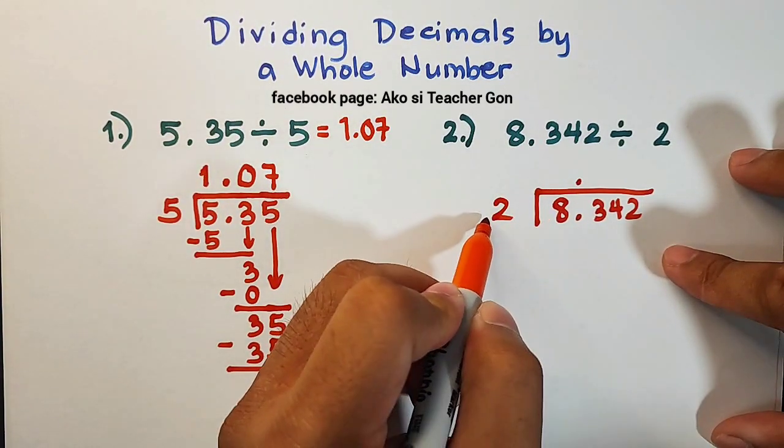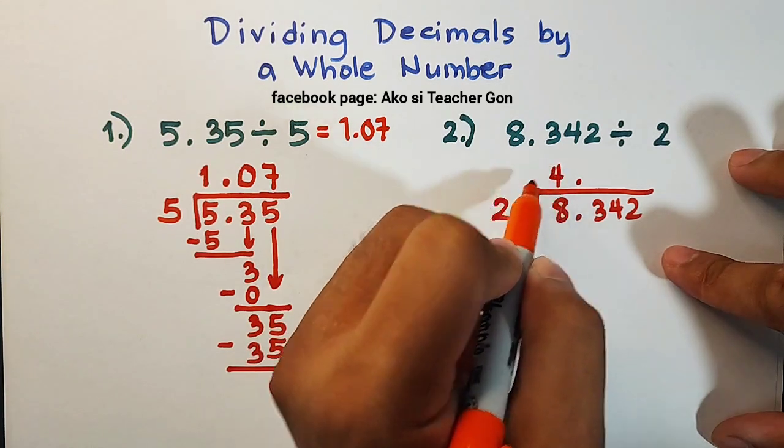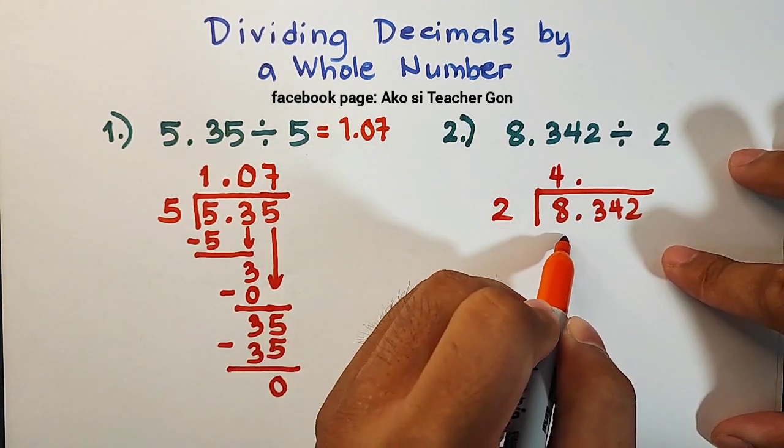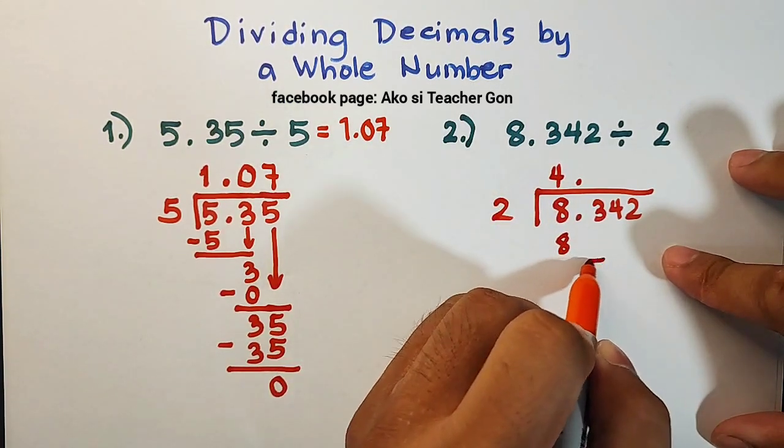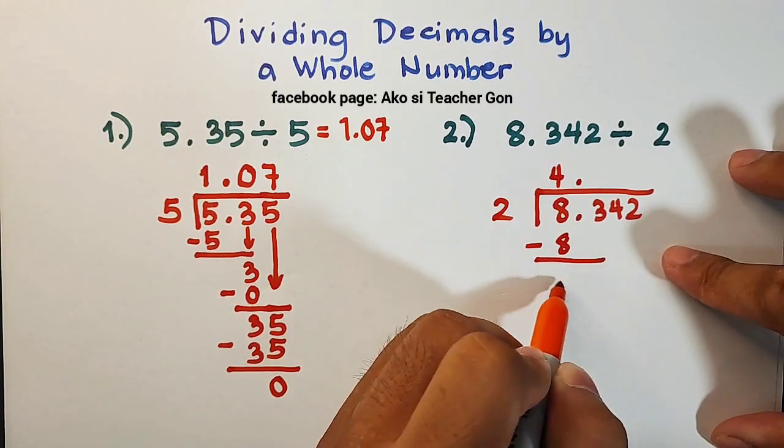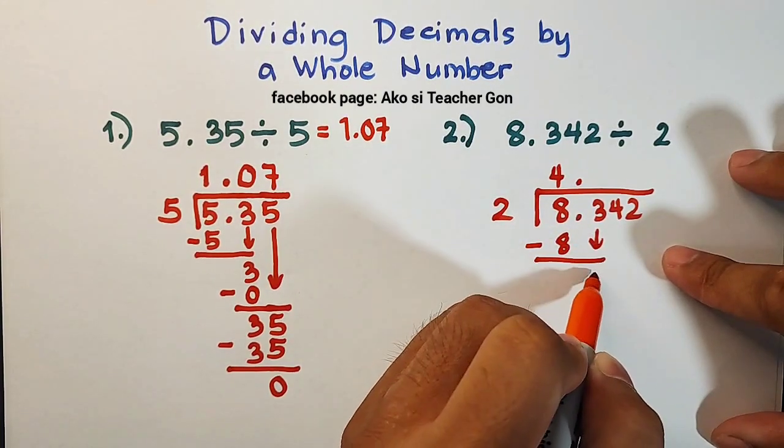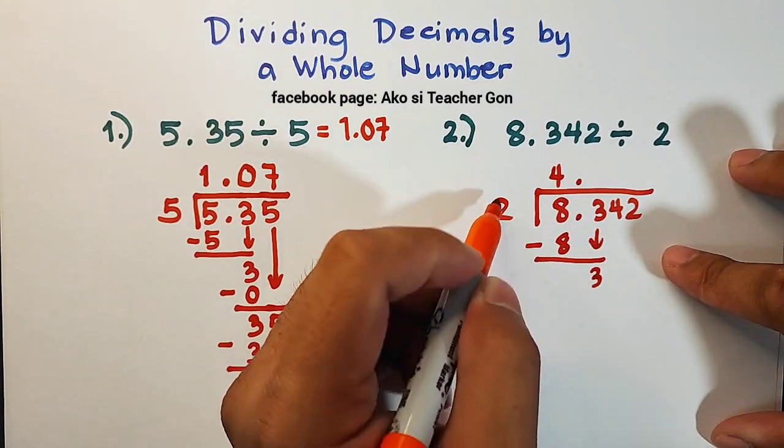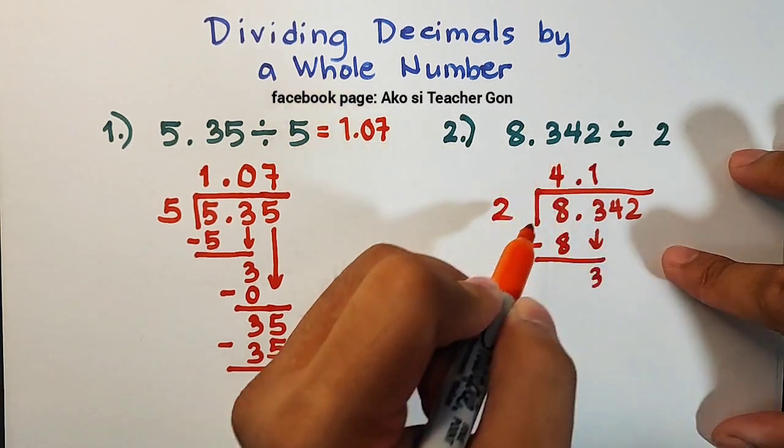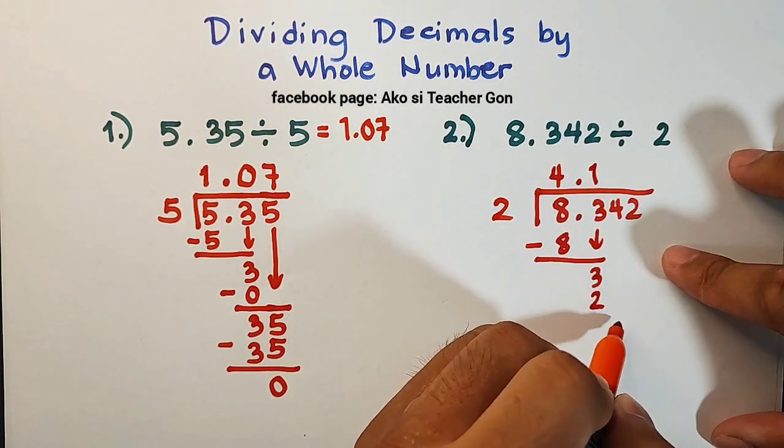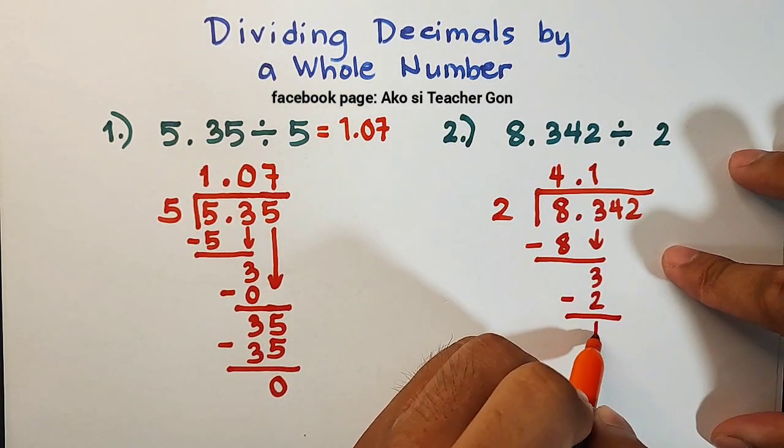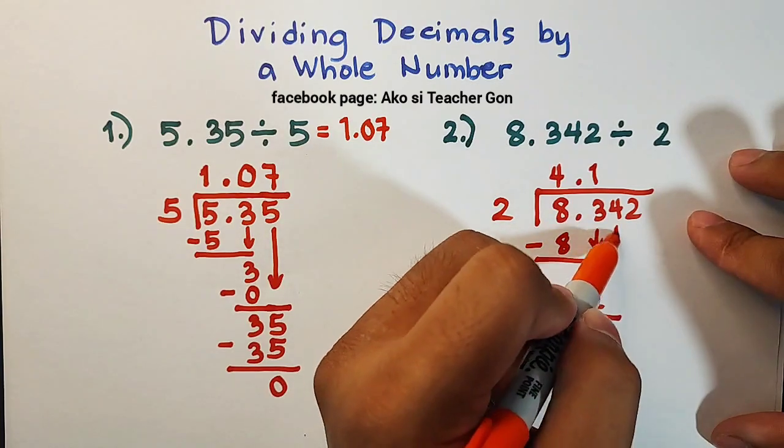What is 8 divided by 2, that is equal to 4, then multiply 4 times 2, which is equal to 8, and then subtract it. This is 0. Then bring down 3. So 3 divided by 2 is 1. 1 times 2 is 2. Subtract. That is equal to 1.